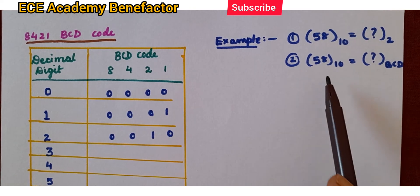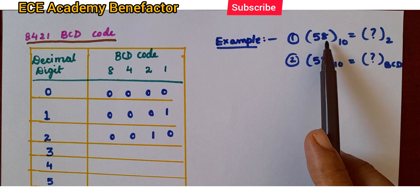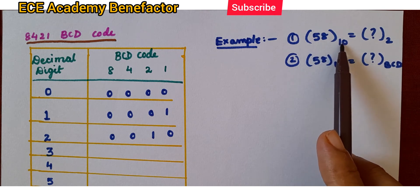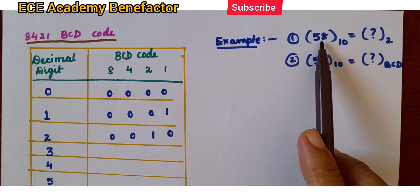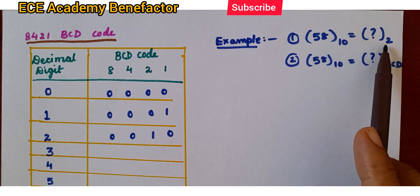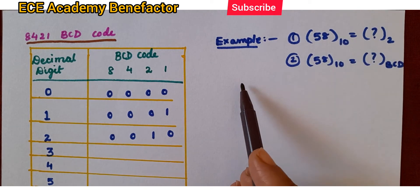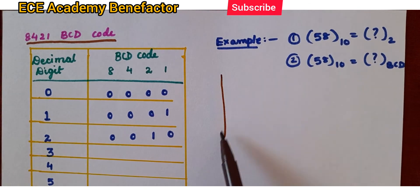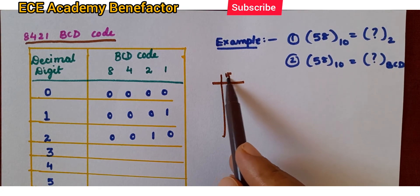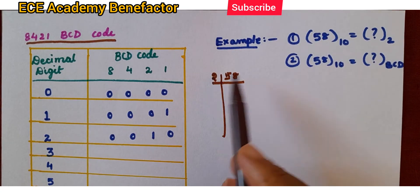Let us take the first example. Convert 58 decimal — the base 10 means it is a decimal number — convert 58 decimal to binary. You know how to convert decimal to binary: divide by 2. So, 58 divide by 2.